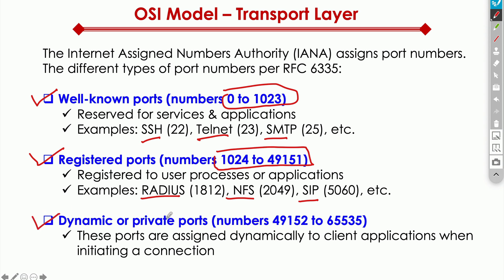Finally, we have dynamic or private ports, also called ephemeral ports. They're called ephemeral because they're very short-lived — they're dynamic and automatically allocated by your system. For example, every time your computer accesses different applications, your operating system picks a port from 49,152 through 65,535 and dynamically allocates it to different sessions — whether that's different web pages, video streams, or whatever.